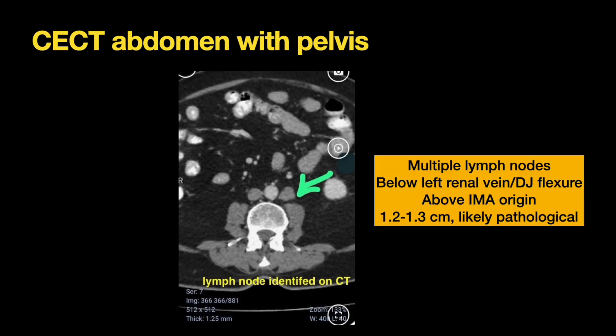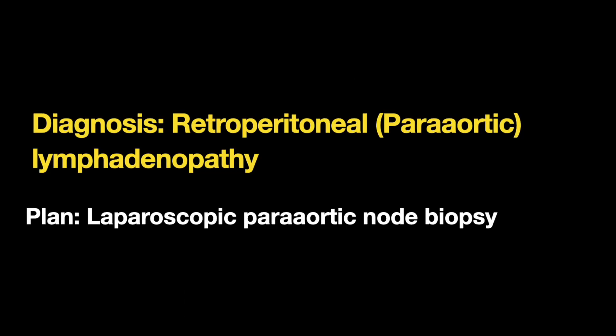CT abdomen with pelvis was done and as we can see there are multiple lymph nodes, mainly below the left renal vein and the DJ flexure, above the IMA origin. It is important to locate these lymph nodes in relation to the fixed key anatomy structures so that one can dissect around them to identify and take biopsy. They were 1.2 to 1.3 centimeters and the impression was that they were likely pathological.